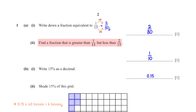Find a fraction that is greater than 1 over 15 but less than 2 over 15. Notice that the two fractions have the same denominator, which is 15. So to get a fraction between 1 over 15 and 2 over 15, we maintain the denominator as 15 and pick a numerator between 1 and 2. Typing 1.5 over 15 into the calculator gives the simplified fraction 1 over 10.